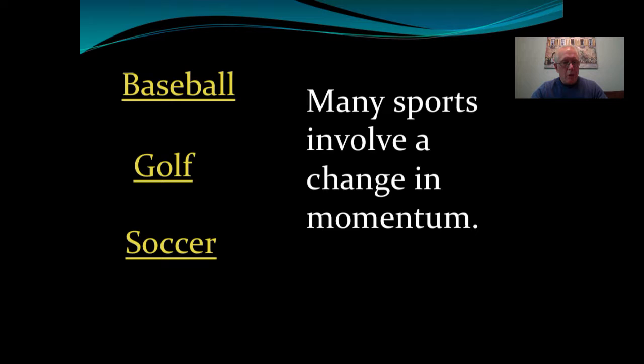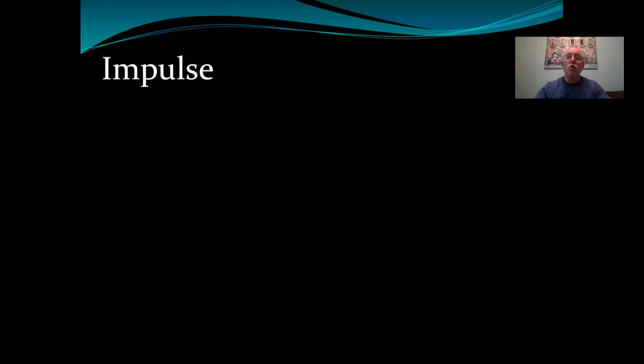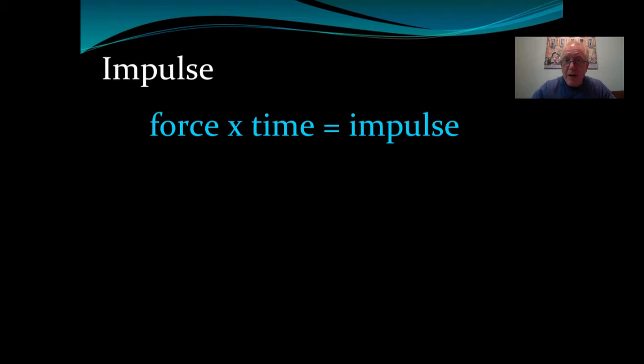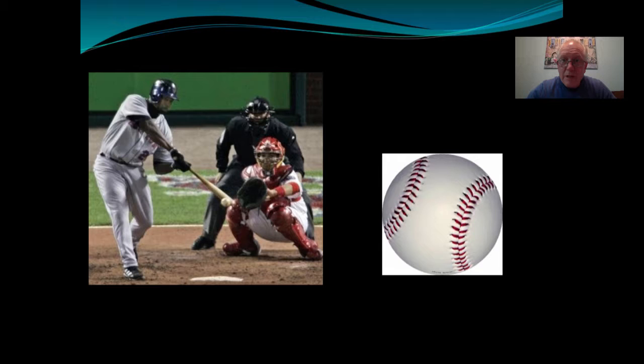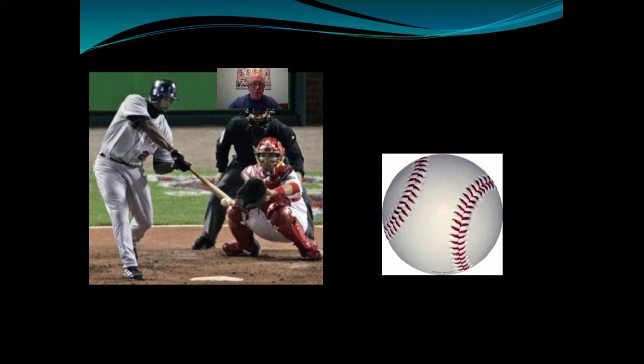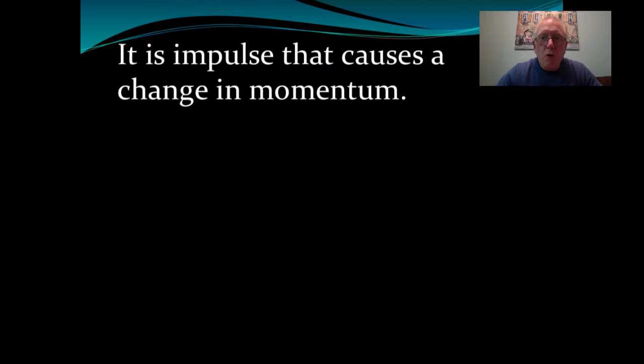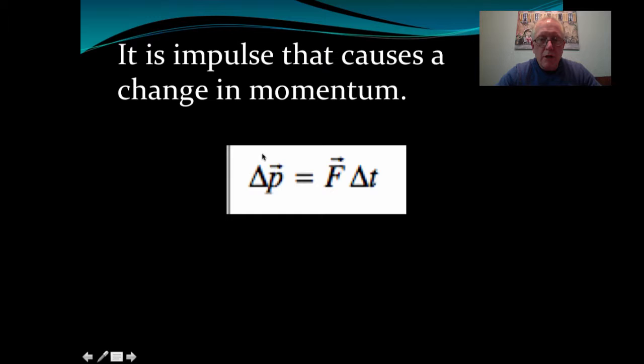Impulse is the physics term for force multiplied by time — how long you apply a force. The formula on your sheet is: impulse = F × Δt = Δp (change in momentum). The longer the batter is in contact with the ball and the greater the force, the bigger the change in momentum. So it's impulse that causes the change in momentum.